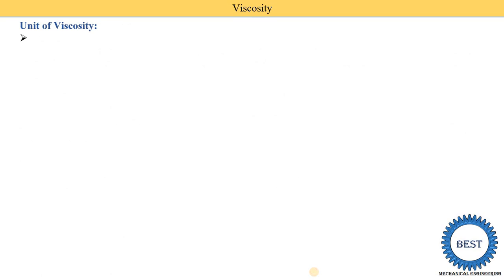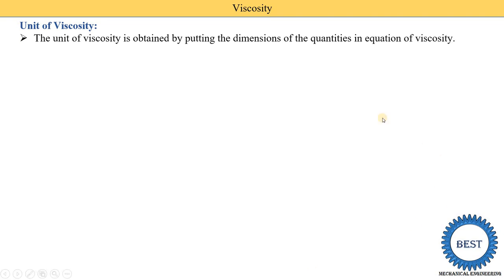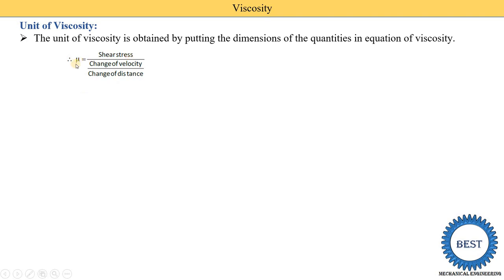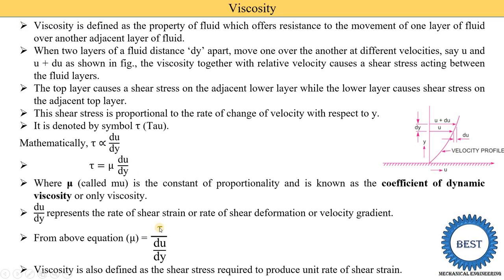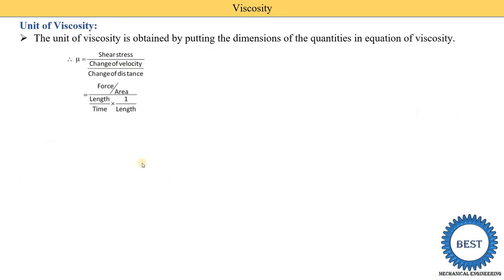Now, what is the unit of viscosity? We substitute the dimensions of each quantity into the viscosity equation: mu equals shear stress divided by (change in velocity divided by change in distance). Shear stress is force per area, velocity is length per time, and distance is length — giving a factor of 1 over length. The lengths cancel, leaving force times time divided by area, where area is length squared.